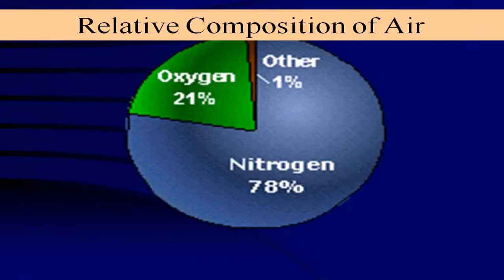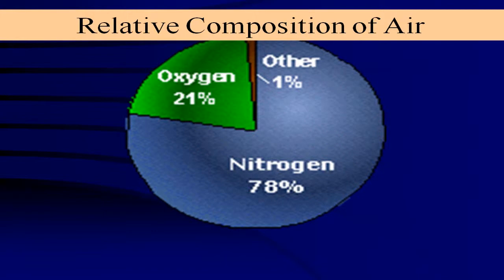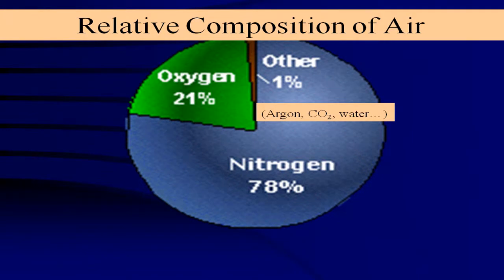In our atmosphere, we have a relative composition of air where air is 21% oxygen, 78% nitrogen — just about 99% of those two elements. Another 1% contains a bunch of different gases, including argon, carbon dioxide, and water vapor. Carbon dioxide and water vapor are particularly variable, with water vapor especially so, meaning their percentages can change. But mainly 21% oxygen and 78% nitrogen.